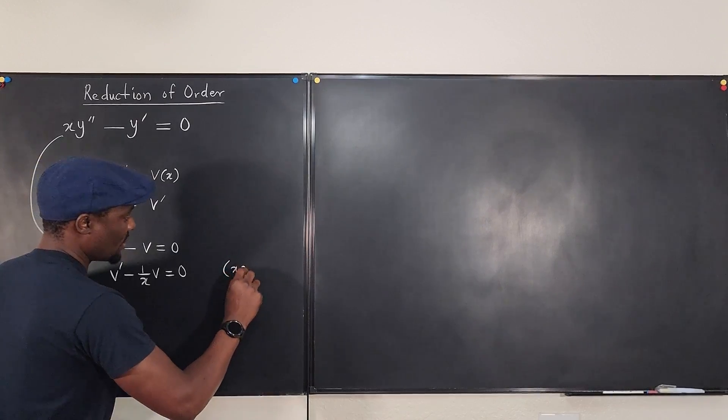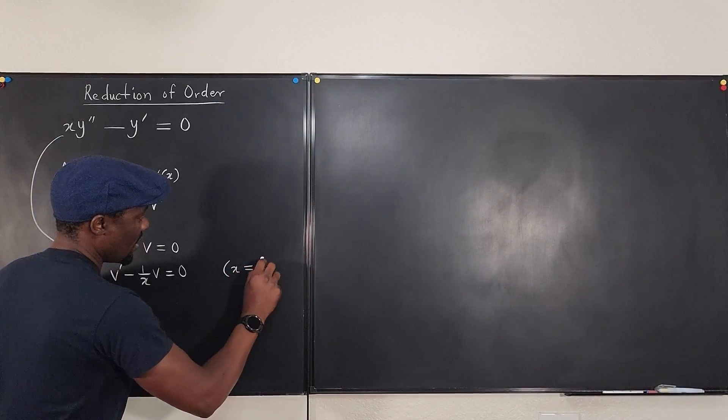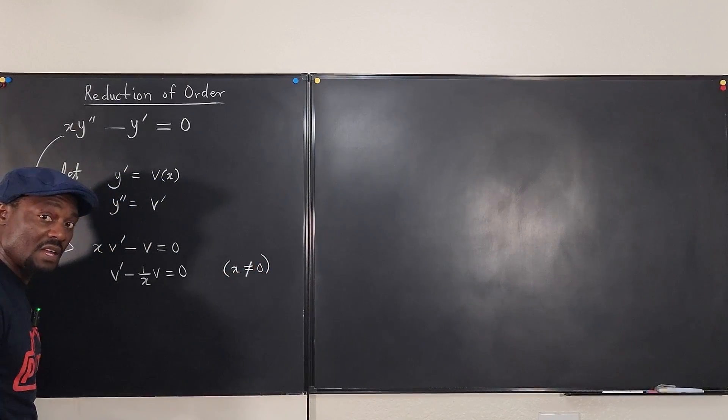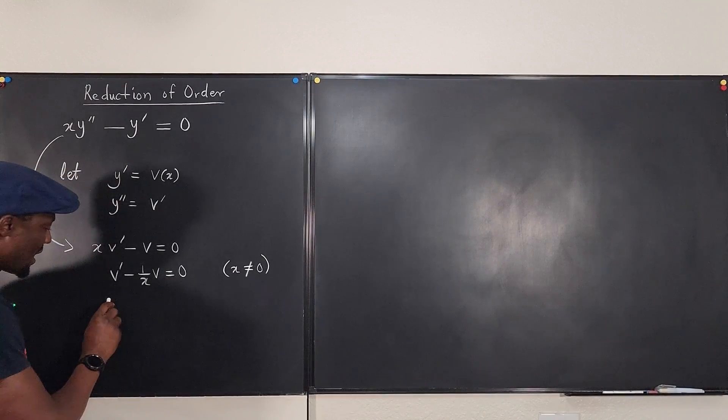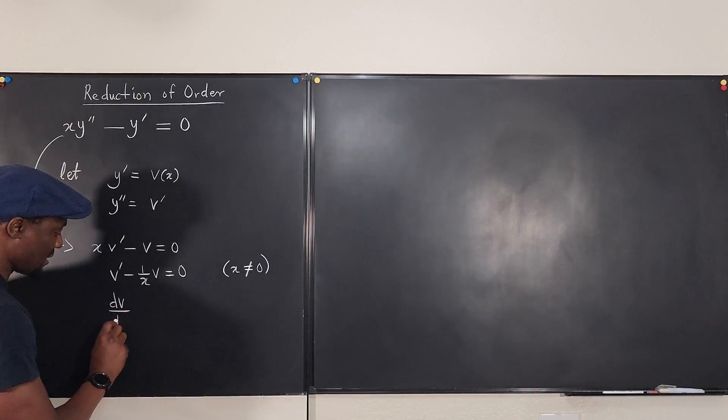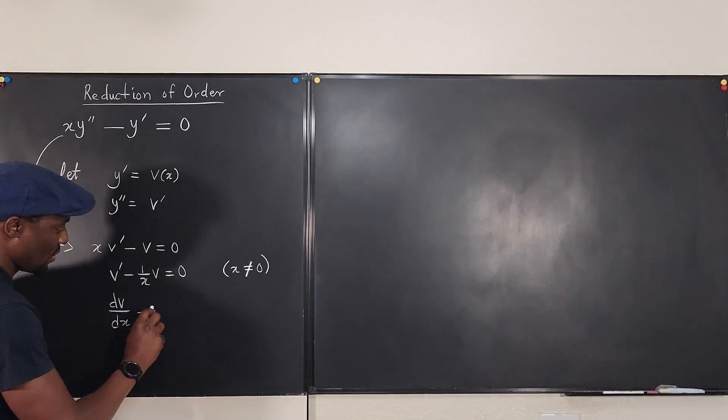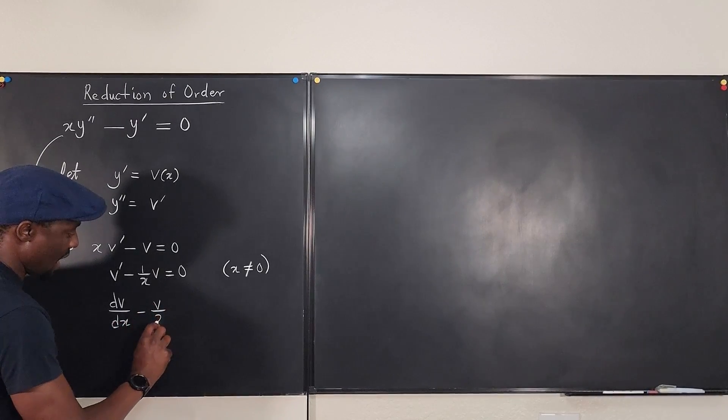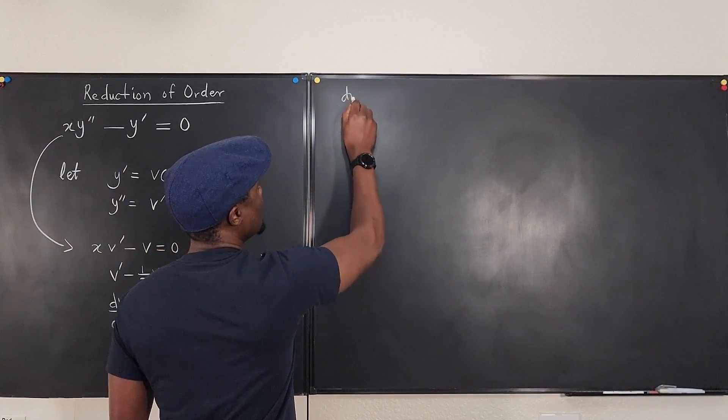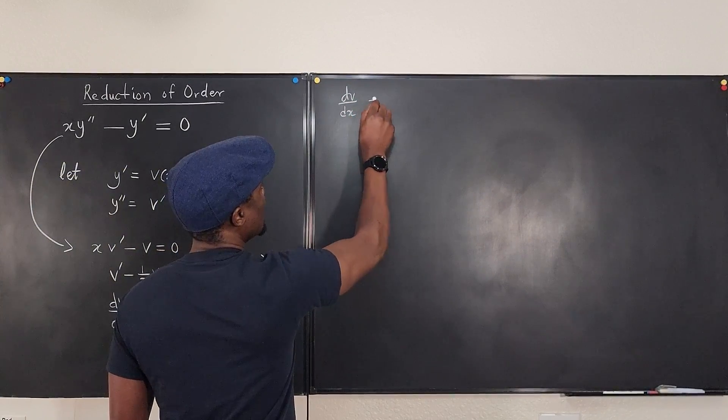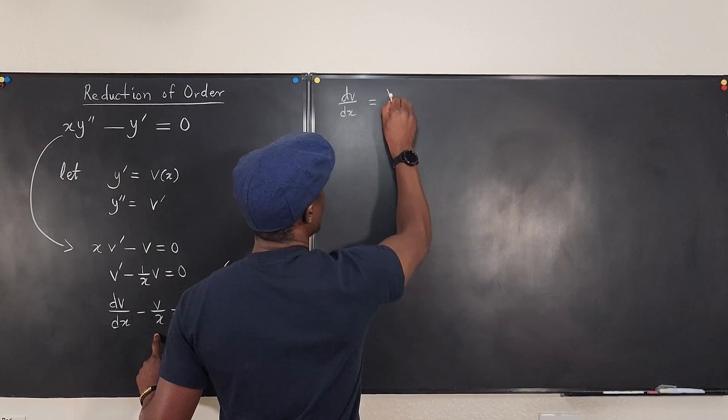Remember, in this case, we'll always assume that x is not equal to zero. That's why we were able to divide by x. So now, what can we do here? We can write this as dv dx minus v over x equals zero. So we can say here, dv dx is equal to v over x.